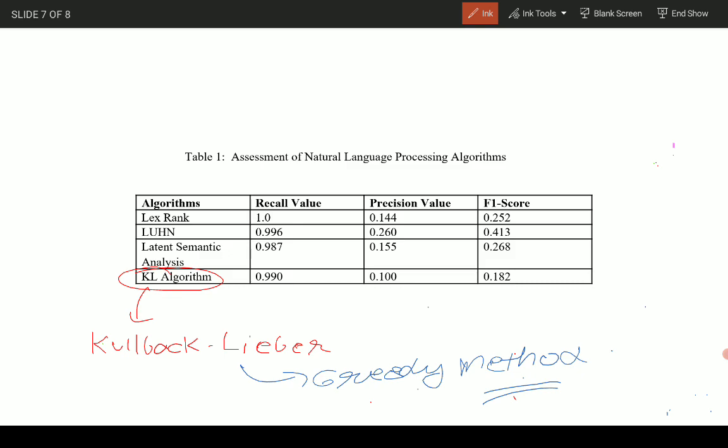We can see from the results that Luhn algorithm is giving the highest F1 score of 0.413. So highest F1 score we are obtaining for the Luhn algorithm.